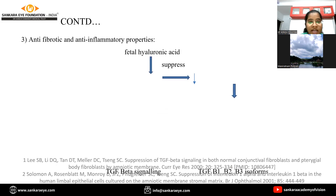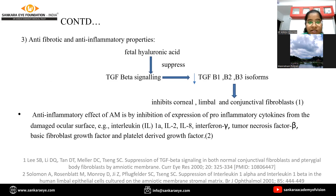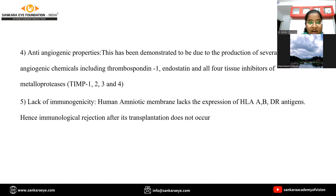Coming to antifibrotic and anti-inflammatory properties: fetal hyaluronic acid suppresses transforming growth factor beta signaling. This reduces TGF-beta 1, beta 2, and beta 3 isoforms, which in turn inhibits corneal limbal and conjunctival fibroblasts. Anti-inflammatory effect of amniotic membrane is due to suppression of pro-inflammatory cytokines like interleukin-1A, interleukin-2, interleukin-8, interferon gamma, and tumor necrosis factor beta.